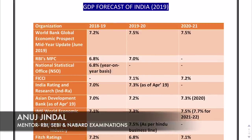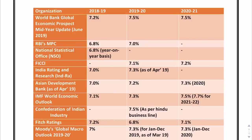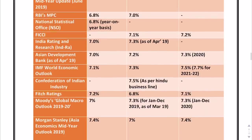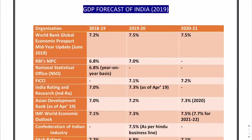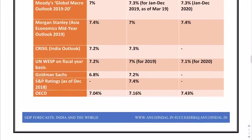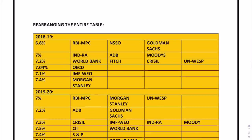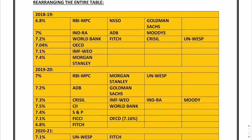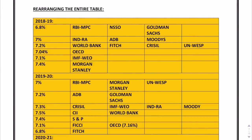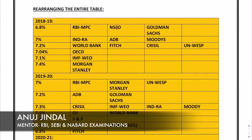Let us move to the Indian forecasts. This is the basic chart or table we have for the Indian forecast, which is similar to the world forecast, but as you can see, a lot of numbers are there and they are very confusing. It is NSO — National Statistical Office or Organization — not NSSO.